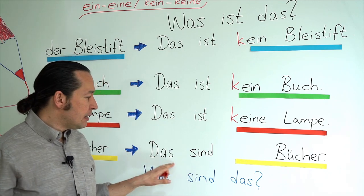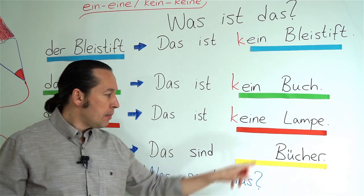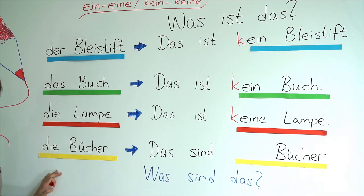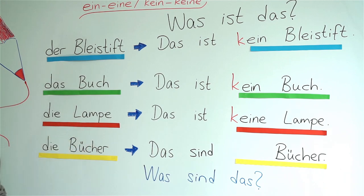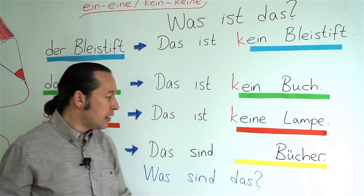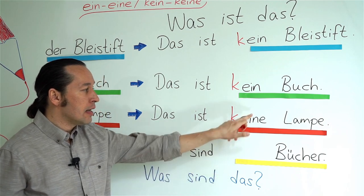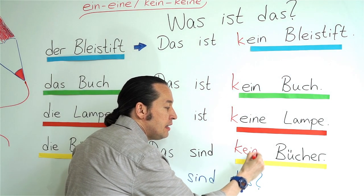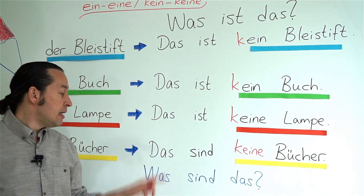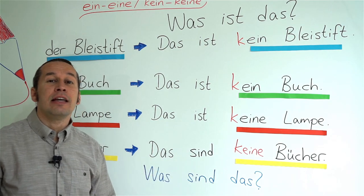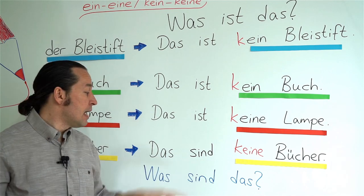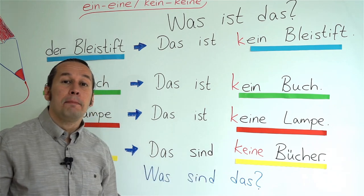For the plural form 'Das sind Bücher', there is no ein or eine. The article 'die' in the plural gives us 'keine'. So 'these aren't books' is: Das sind keine Bücher. And the question for plural is: Was sind das? — Das sind keine Bücher.